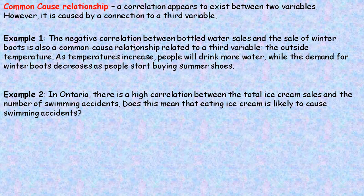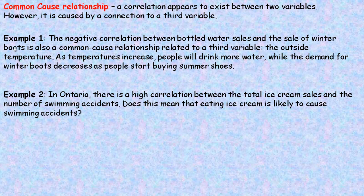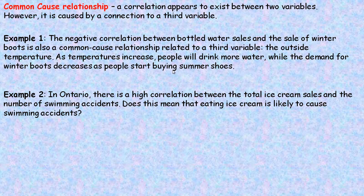A common cause relationship is when a correlation appears to exist between two variables, but that relationship is actually caused by a connection to a third variable. An example is the negative correlation between bottled water sales and the sale of winter boots: as bottled water sales decrease, winter boot sales increase. This is linked to a third variable — outside temperature. As temperatures increase, people drink more water and demand for winter boots decreases as people start buying summer shoes.